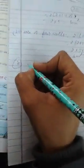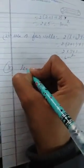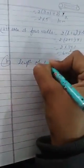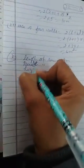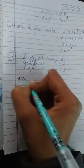It means first of all we will find the area of 4 walls. What is given? Length of room is equal to 8 meter, breadth of room is equal to 6 meter, height is 5 meter. Area of 4 walls.